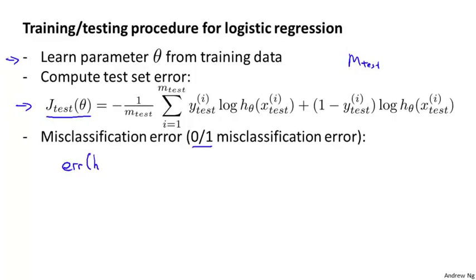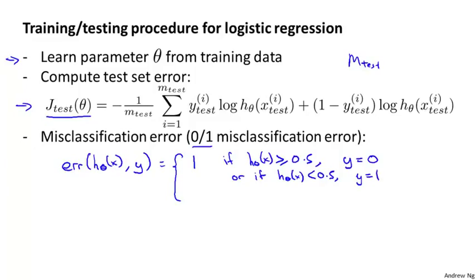Let me define the error of a prediction, that is h of x, and given the label y as equal to one, if my hypothesis outputs a value greater than or equal to 0.5 and y is equal to zero, or if my hypothesis outputs a value less than 0.5 and y is equal to one. So both of these cases basically correspond to if your hypothesis mislabeled the example, assuming you threshold it at 0.5.